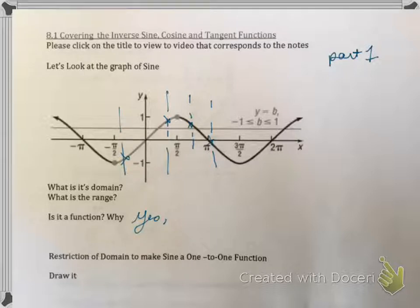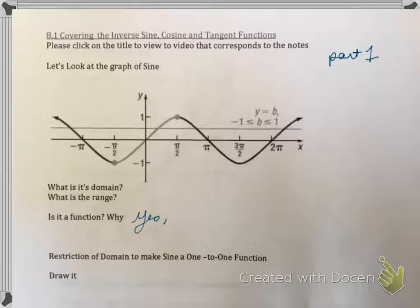It's also continuous. Alright, but if you want to take the inverse of one of these trig functions, you have to make it one to one, and this is where the original sine graph is a problem. The original sine graph is not one to one because it flunks what's called the horizontal line test.